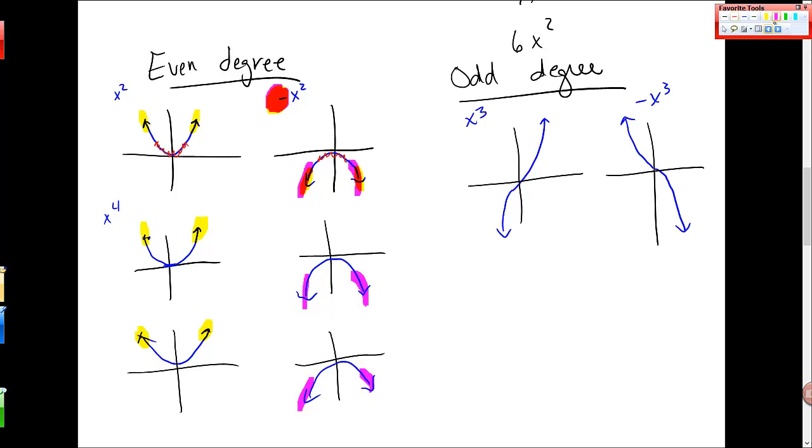And then for x cubed, the behavior is, for when this is positive, it's down to the left, up to the right. And when it's negative, it's like this. I always just think about what these basic functions, honestly, I kind of know what x squared and negative x squared look like, and what x cubed and negative x cubed look like. And then I remember that there's this kind of commonality through even and odd degrees.